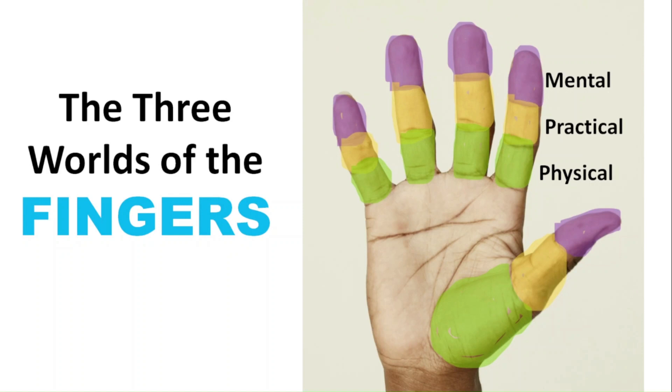If the top joints of your fingers are most developed, meaning it's the longest and the thickest, then you're more in the mental world. You might like to daydream or come up with big ideas. If the middle section of your fingers is the most developed, then you're more practical. Your ideas are more realistic, so you're more likely to bring them to fruition.